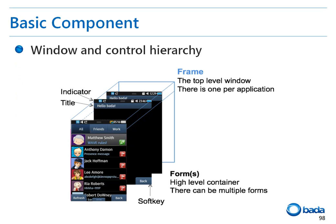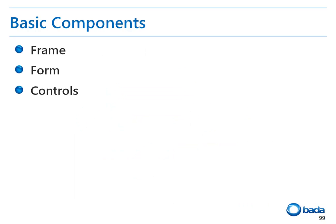Let me show you the Bada UI layers. A Bada application has a top window called a frame. A form that has a title bar and soft keys is placed on top of the frame. Other UI components are placed on top of the form. Therefore, the core components of a Bada UI are the frame, the form, and the controls that refer to other UI components.